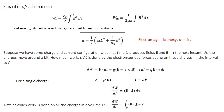If you recollect our discussion in electrostatics, we derived an expression for energy stored in the electrostatic field, which is nothing but the work done against the Coulombic repulsion to have a static charge collection. This is given by epsilon over 2 times the integral of E squared d tau. Similarly, the energy stored in the magnetic field is the work done against the back EMF to get the current flowing in a circuit. This is given by 1 over 2 mu naught times the integral of B squared d tau.